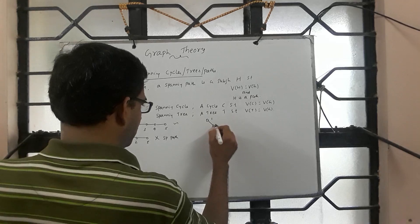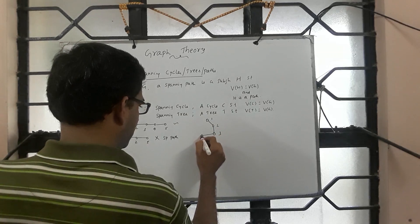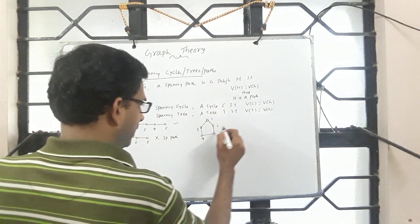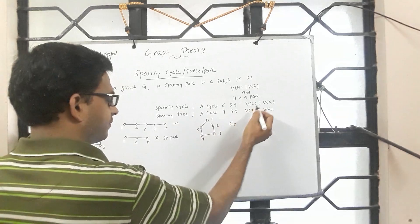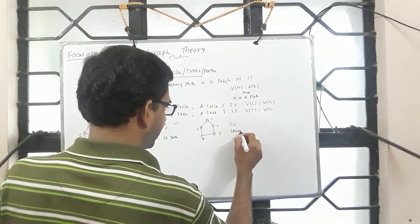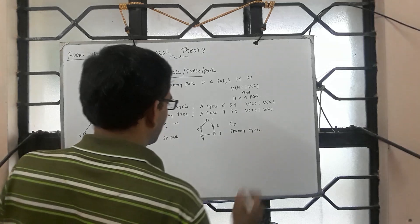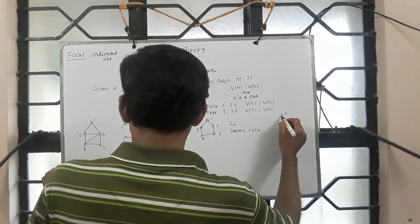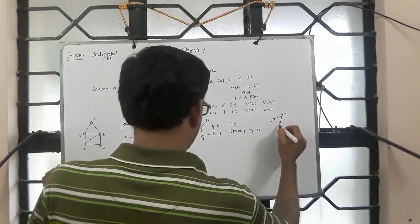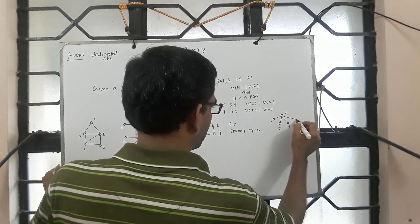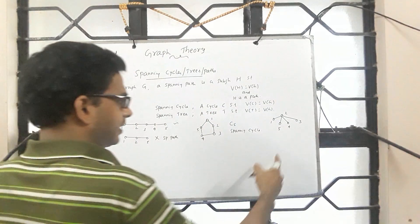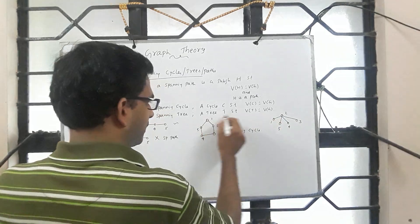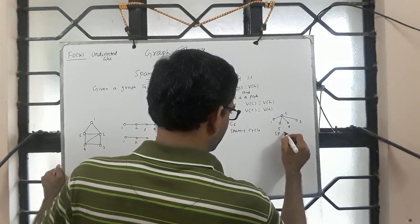Now look at 1, 2, 3, 4, 5 — this is a cycle and it contains all of V of G, so this is an example of a spanning cycle. With respect to vertex 2, you go to 1, 5, 4, and 3, forming the cycle.